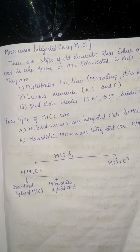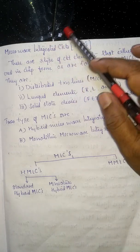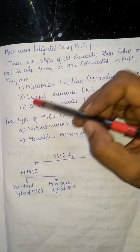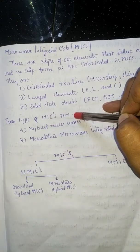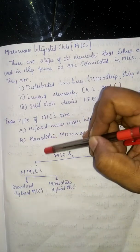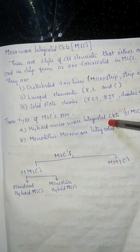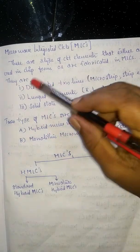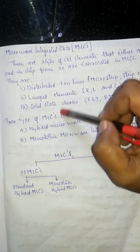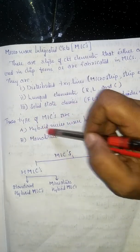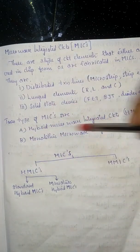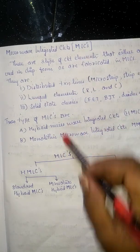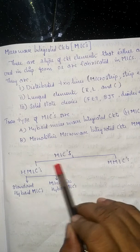Based on the fabrication technique used, MICs can be categorized into two types: hybrid microwave integrated circuits and monolithic microwave integrated circuits (MMICs).